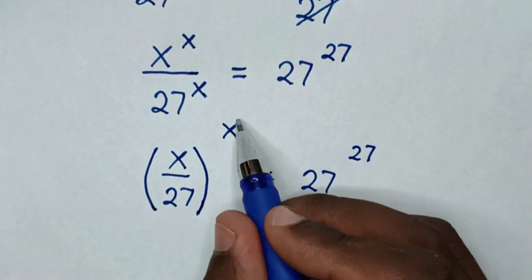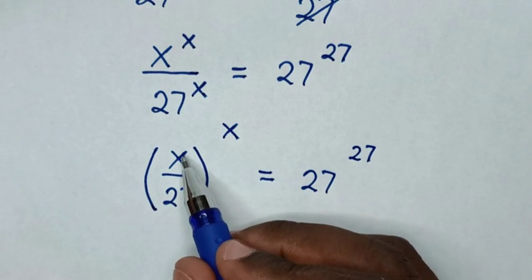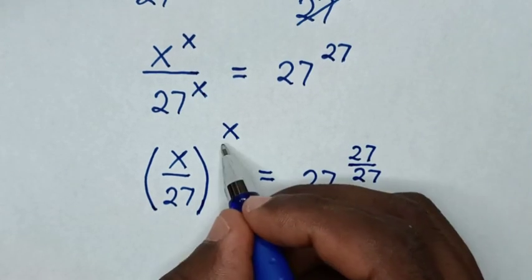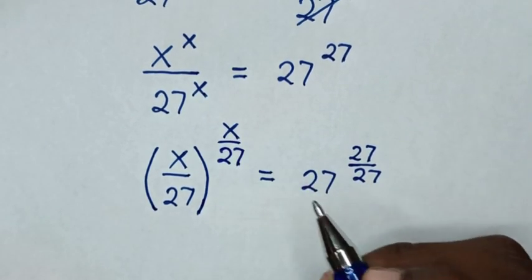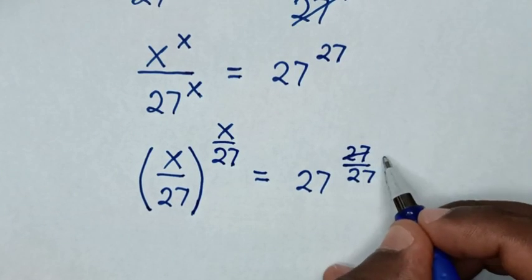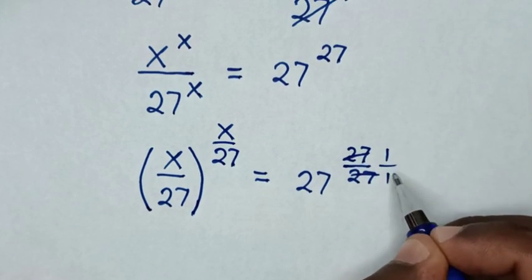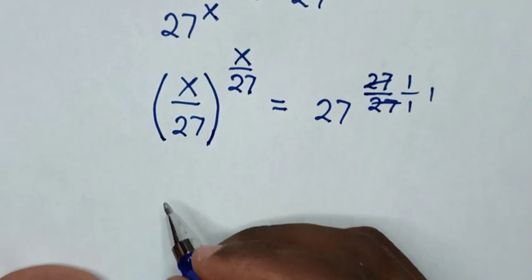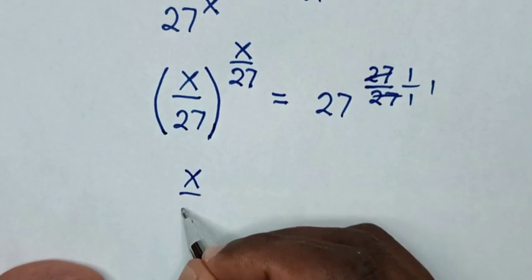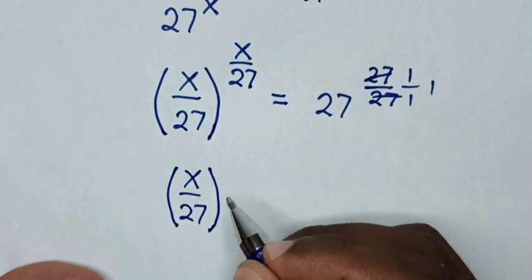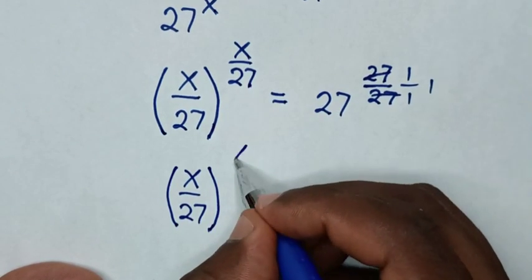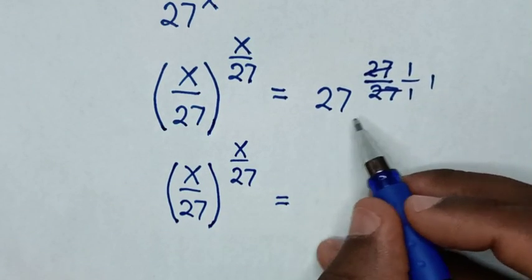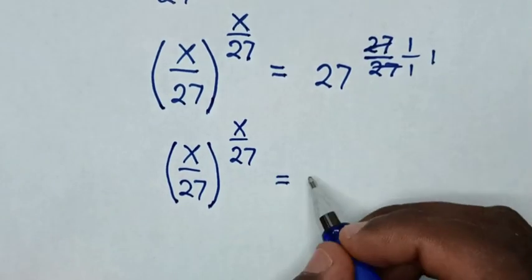In the next step, we make the power the same as the base of x over 27. So we will divide the power by 27 on both sides. To simplify, 27 cancels by 1, so 1 over 1 is 1. Then it will be x over 27, bracket, to the power of x over 27, is equal to 27 power of 1, which is the same as 27.